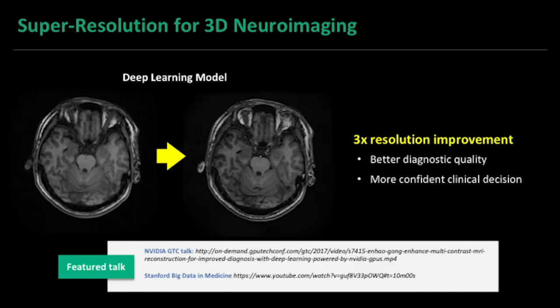Most radiologists like high resolution images so they can see very small structures, but unfortunately it takes a long time to acquire them. One approach called super resolution is to acquire low resolution images, which are faster, and then try to predict what the high resolution image looks like. There's also a lot of concern around radiation exposure and the potential effects of MR contrast agents such as gadolinium. Can you share how with PET, for example, you can achieve faster scan times or lower dose imaging, and the impact that this could have on hospital throughput?